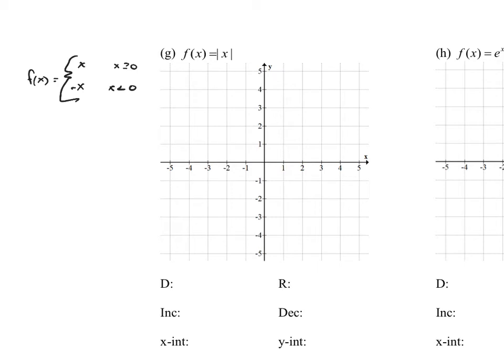Anytime x is greater than or equal to 0, it returns the number. Anytime it's less than 0, a negative number, it returns the opposite — a positive. The reason I'm bringing this up is we cannot put the absolute value of x into our calculator, but we can put x and negative x into our calculator. So if we want to use the table feature on our calculator for the absolute value of x, we need to analyze both of these functions individually.